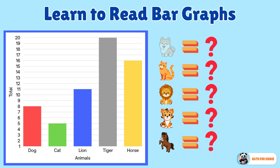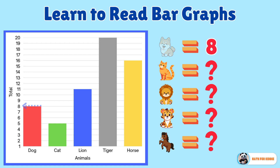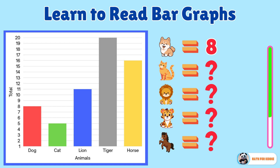How many dogs are there? It is eight. You're absolutely right, great job. Now let's look at cats. How many cats are there? It is five. You're doing amazing.